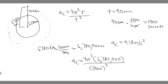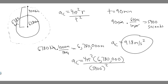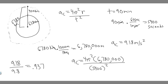Now we have to express it in terms of g. To convert, take your centripetal acceleration in meters per second squared and divide by 9.8, since there are 9.8 meters per second squared for every one g. So 9.18 divided by 9.8 gives approximately 0.937 g. That is your answer in terms of g.